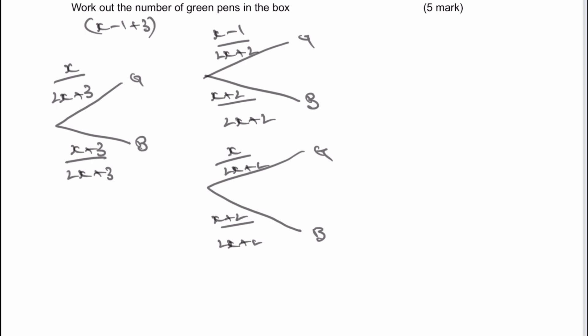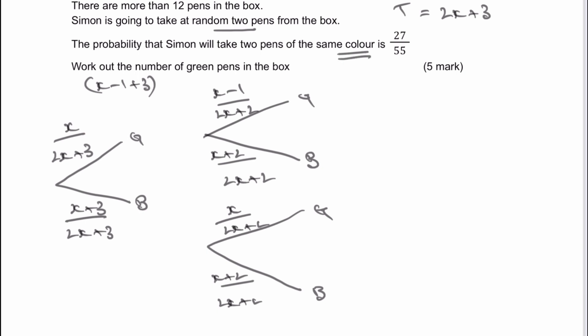What am I interested in? I'm looking at pens of the same colour. So I'm interested in green, green, and I'm interested in blue, blue. How do we work that out? For green, green, we're going to multiply across the branches. What I'm going to get is x times x minus 1, all divided by 2x plus 3, multiplied by 2x plus 2. I'm going to multiply it all out, and I've got x squared minus x, all divided by 4x squared plus 10x plus 6.